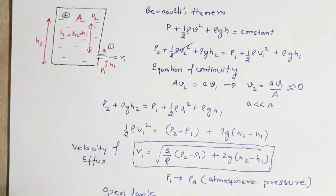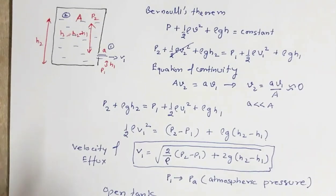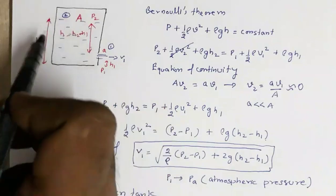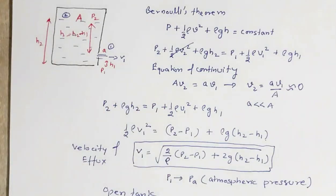This is Torricelli's theorem. According to Torricelli's theorem, the speed of efflux from an open tank is given by a formula identical to that of a freely falling body. This is the velocity of efflux provided the tank is open.